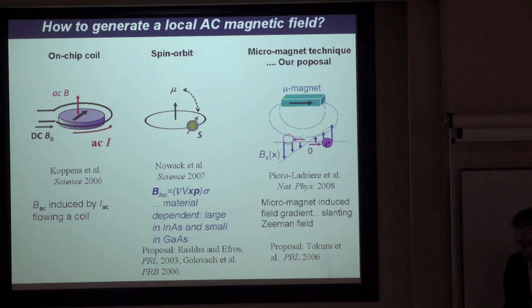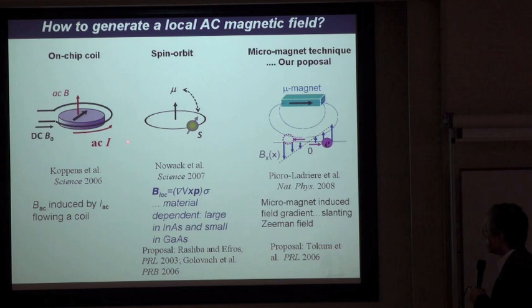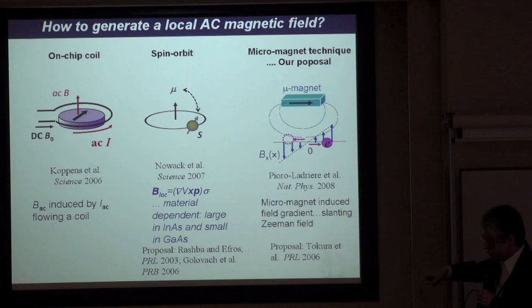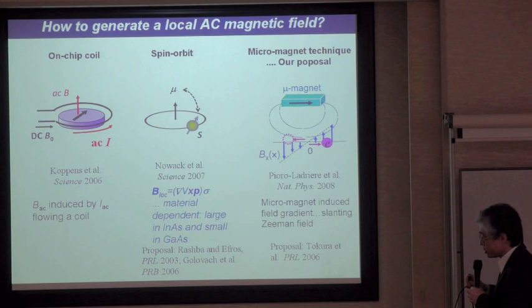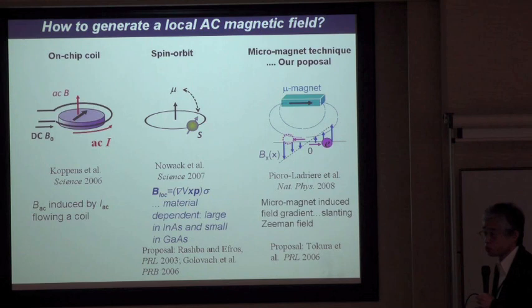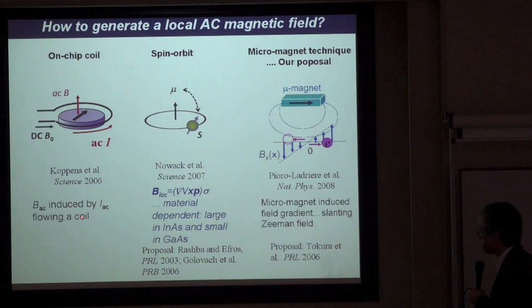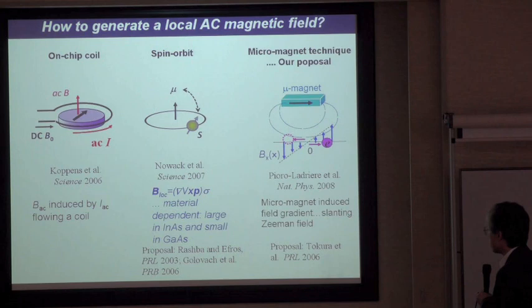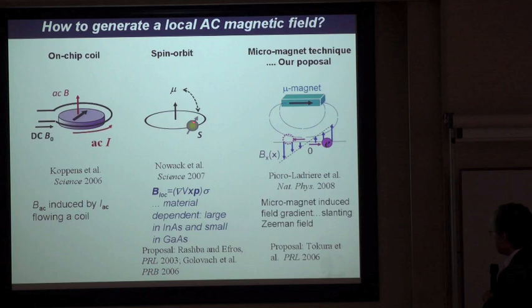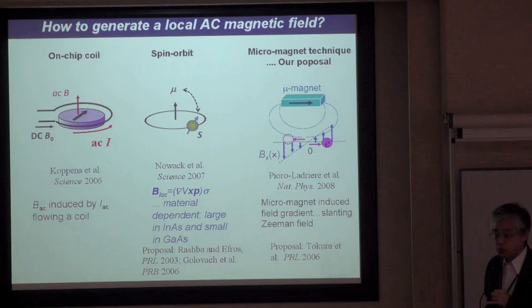The next step is how to make a local AC magnetic field. There are already a couple of demonstrations. The straightforward approach is to make a very tiny coil on top of the quantum dot holding just one electron and inject an AC current to induce an AC magnetic field perpendicular to the plane. Another idea is to use spin-orbit coupling — just by applying an AC electric field to the dot, this AC electric field is converted to a local magnetic field through spin-orbit interactions.